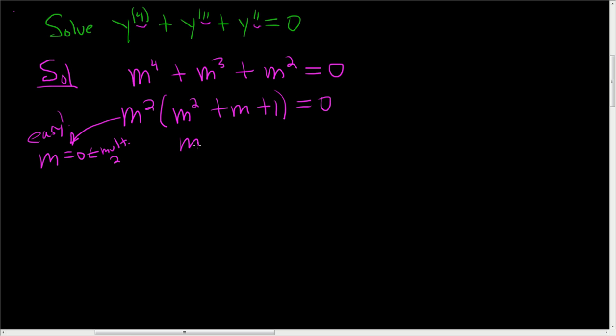Now this here, we set this equal to 0. It doesn't look like it factors nicely to me. I can't do it in my head, so we'll use the quadratic formula. All right. So a here is 1, b here is 1, c here is also 1.